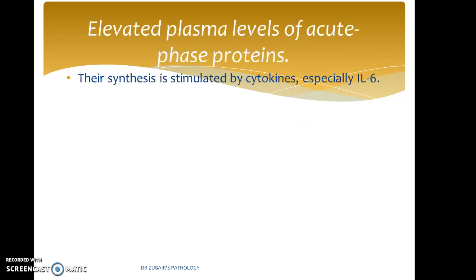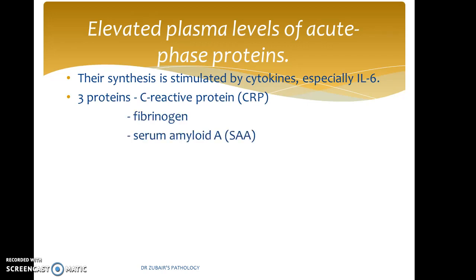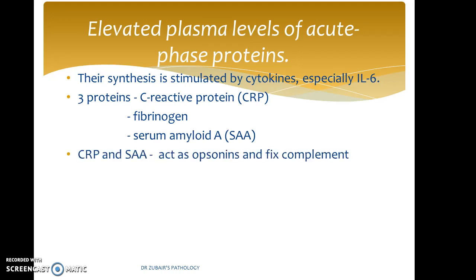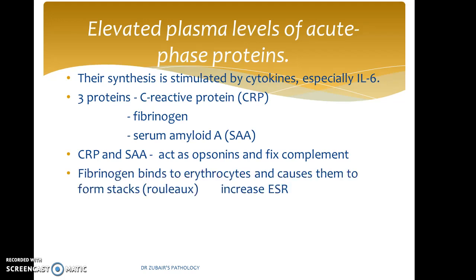Coming to elevated plasma levels of acute phase proteins: this synthesis is stimulated by cytokines, especially interleukin-6. There are three proteins: C-reactive protein, fibrinogen, and serum amyloid A. CRP and serum amyloid A act as opsonins and fix complement. Fibrinogen binds to erythrocytes and causes them to form stacks, or rouleaux, which increases the ESR.